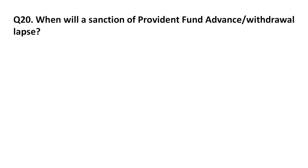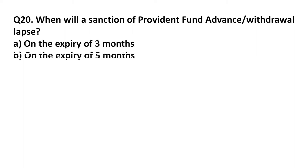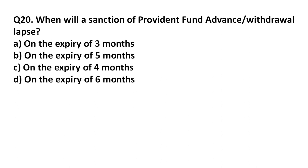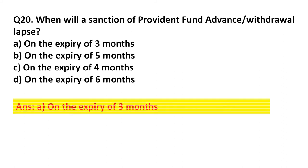Question 20: When will a sanction of provident fund advance lapse? Option A: On the expiry of three months. Option B: On the expiry of five months. Option C: On the expiry of four months. Option D: On the expiry of six months. Answer: Option A, on the expiry of three months.